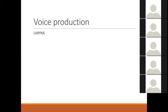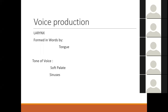We are going to talk about hoarseness. Voice is produced in the larynx, which is formed in words by the tongue, so these are the two important organs in our body which produce the voice. The tone of the voice involves the soft palate and sinuses — when you have a cold or blocked sinuses your tone changes, and if somebody has a cleft palate or paralysis of the palate they have a nasal voice because of air leakage through the nose.